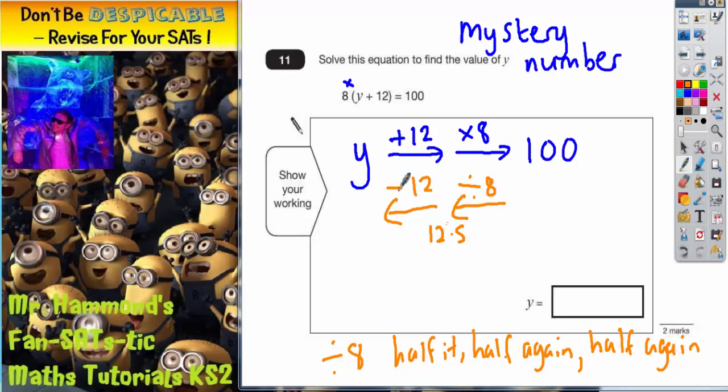Now we need to continue along this arrow, subtract 12. So 12.5 subtract 12 is 0.5. So y equals 0.5. Or you could put in a half, but that is the value y, a half or 0.5.